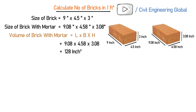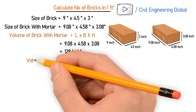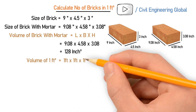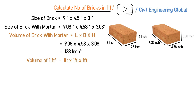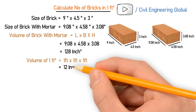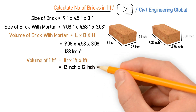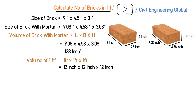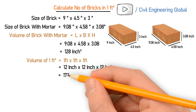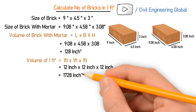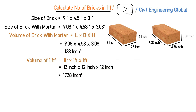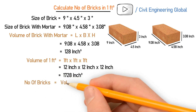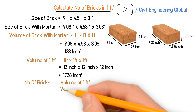After this we have to calculate the volume of one cubic feet. The volume is 1 × 1 × 1. As we know that 1 foot is equal to 12 inches, so this becomes 12 × 12 × 12. After solving this you will get 1728 cubic inches. This is the volume of 1 cubic feet area.